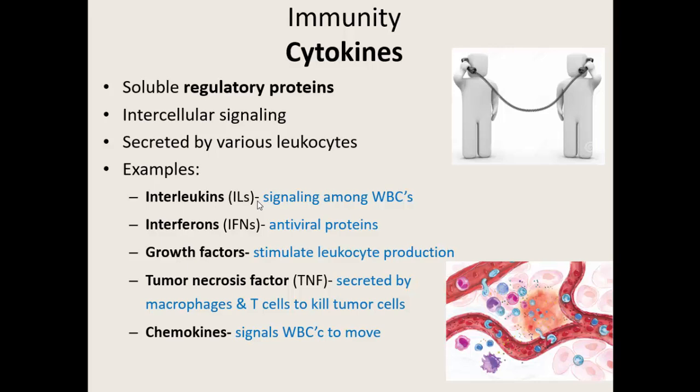We also have tumor necrosis factor — various macrophages and T cells secrete these to help kill tumor cells and regulate our immune response. Chemokines signal white blood cells to move, usually toward an infection or inflammation. 'Chemo' can mean movement, so these are causing white blood cells to move toward the infection before that infection can travel.